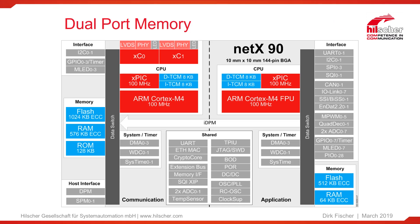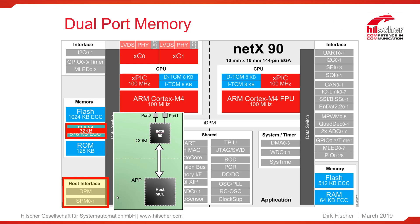Let's have a look at the block diagram of NETX 90. This dual port memory is physically located on the communication side of NETX 90. We have explained in other video tutorials the separation between the application side and the communication side. We have a RAM of more than 500 kilobytes, and we use a small portion of 32 kilobytes as a dual port memory. This dual port memory can be accessed from the outside world via our host interface. The companion chip use case uses an external host controller to access NETX 90, and this white arrow is connected to this interface, making access to this RAM possible.